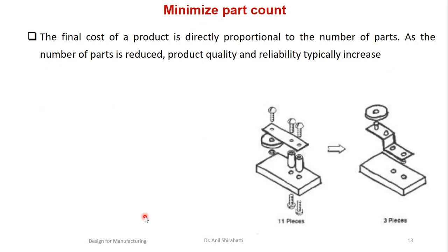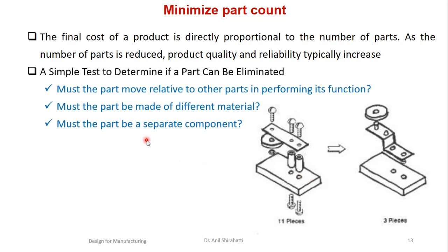The first principle: minimize the number of parts. The final cost of the product is directly proportional to the number of parts. As the number of parts is reduced, product quality and reliability typically increases. We have a simple test to determine if a part can be eliminated. The first design consists of 11 pieces, and the improved third design consists of only 3 pieces, so the number of parts got reduced.